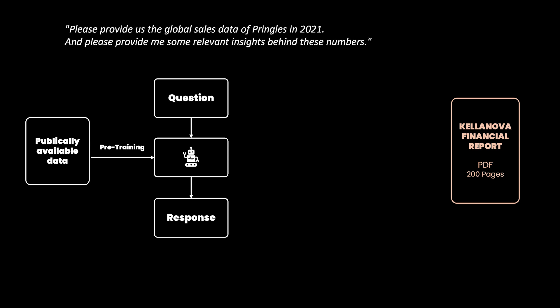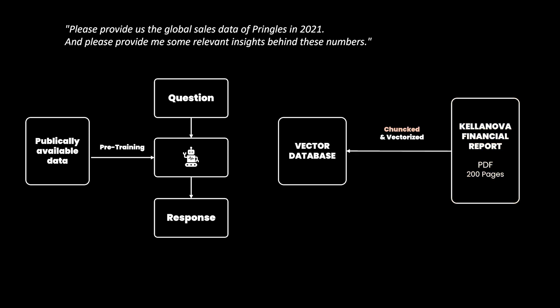Let's further deep dive into this RAG process. In the first step, the PDF would be chunked into smaller, more manageable pieces. After the PDF is chunked into smaller pieces, the different chunks are vectorized. This means the chunks of text are turned into an array of numbers which represent the full meaning or semantics of the chunk of text. These vectors are now stored into a vector database.